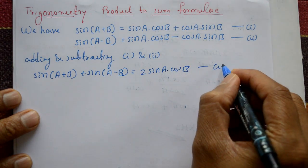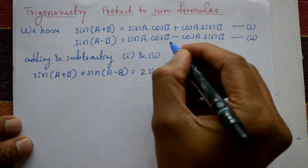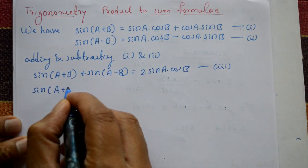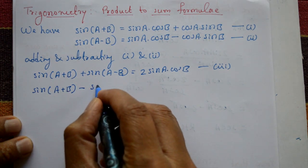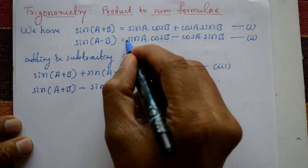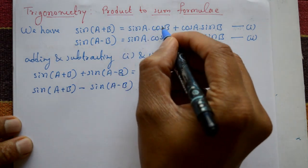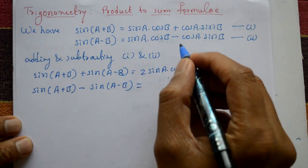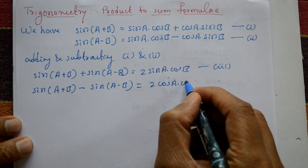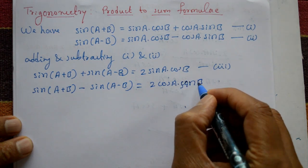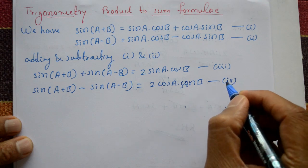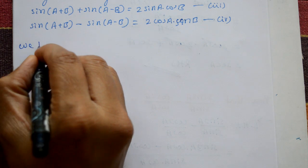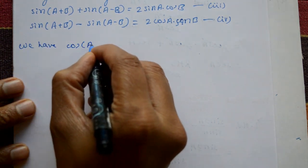When subtracting equation one and two: sin(a + b) − sin(a − b). On the right-hand side, the plus terms cancel, and we get two times cos a · sin b. This is equation number four.